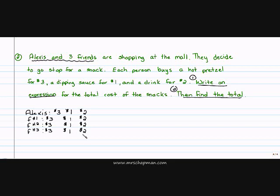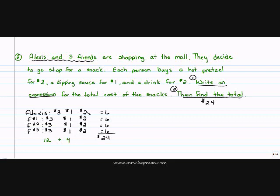There are a couple different ways I can do this. First, I'm going to use this table and find my total cost. I can say three plus one is four, plus two is six. Since they're all buying the same thing, they're all spending six dollars, and six plus six plus six plus six will give me 24 — a total cost of 24 dollars. Another way is three plus three plus three plus three is 12, plus one plus one plus one plus one is four, plus two plus two plus two plus two is eight, which also gives me 24 dollars.